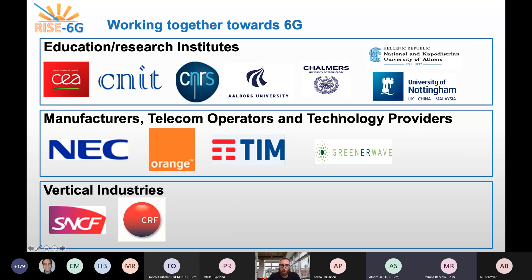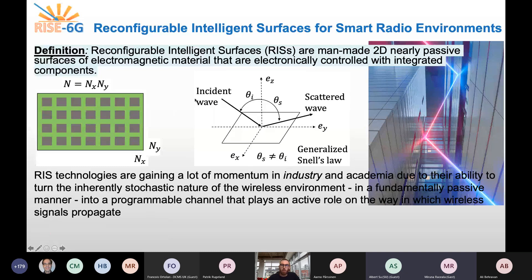We have a strong consortium with seven different academic partners, projects, and research institutes, two manufacturers such as NEC and Greenerwave, and two major European telecom operators Orange and Telecom Italia, which will help establish two different field trials at the end of the project lifetime. SNCF, the French train company, will deploy RIS in a public environment such as the railway station in Rennes, and Fiat CRF will apply the new RIS paradigm in one of their facilities in Italy.